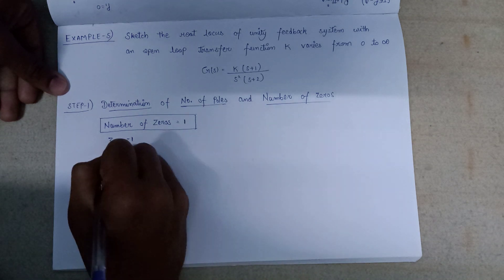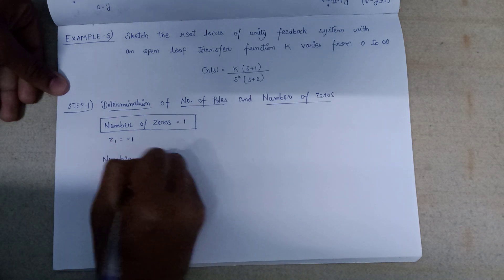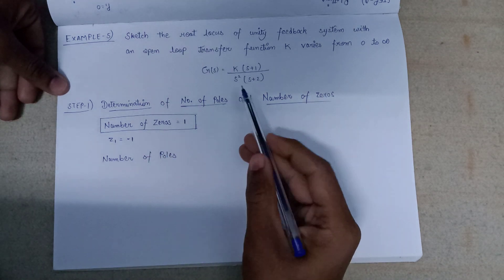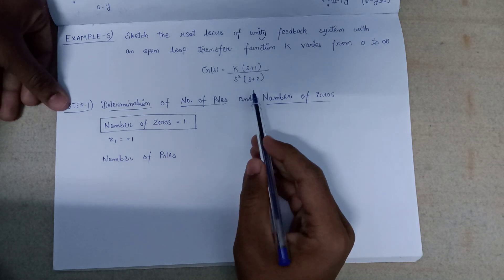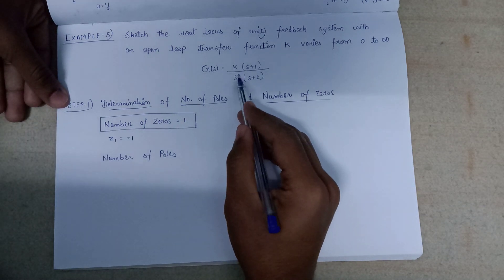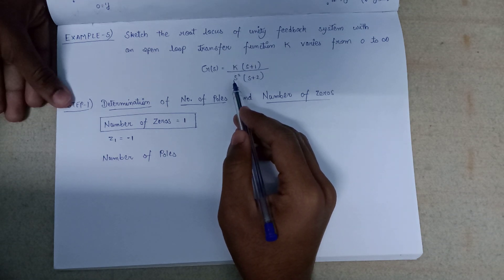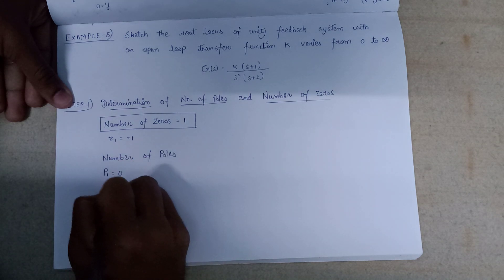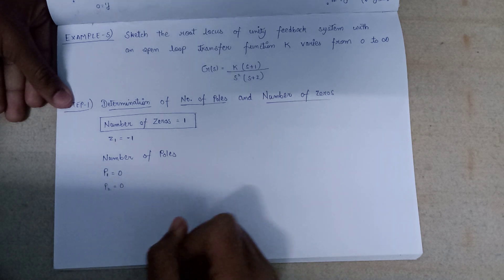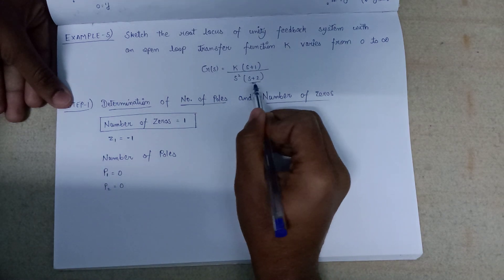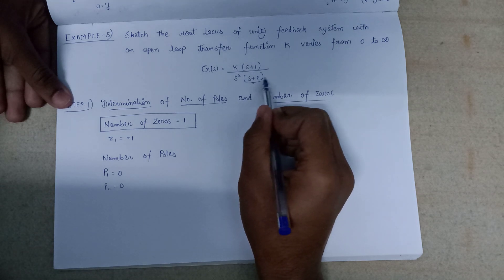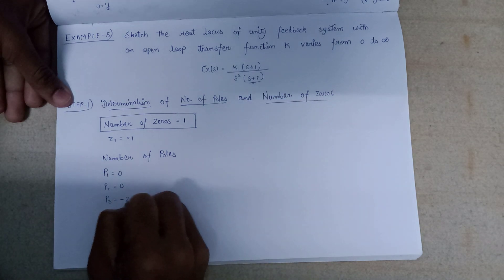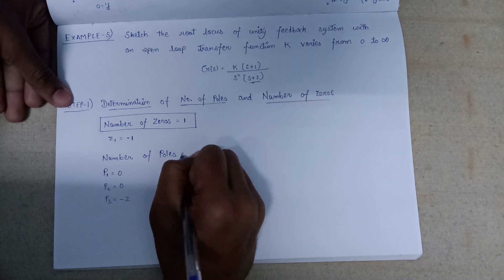Now let's find the number of poles. On equating the denominator to zero, the s² term gives two poles at s = 0, so pole p1 and pole p2 both lie at zero. The third pole p3 is found by equating (s + 2) = 0, giving p3 at s = -2. So the number of poles is equal to three.